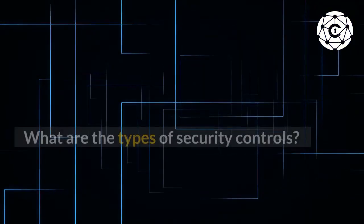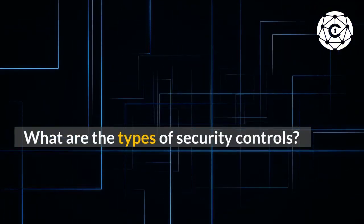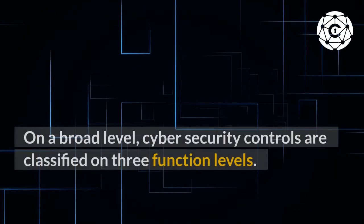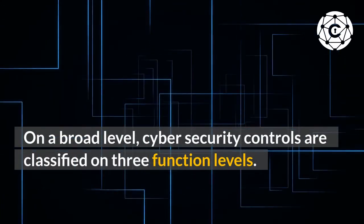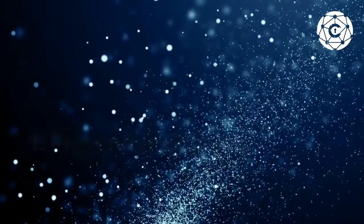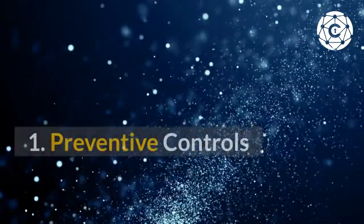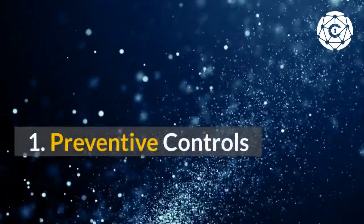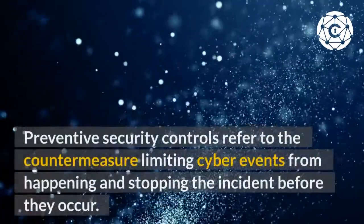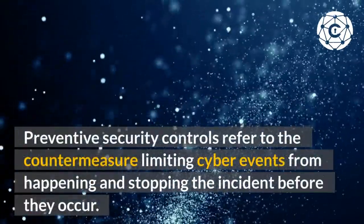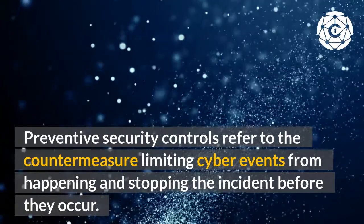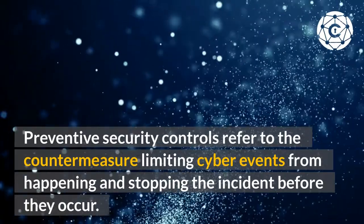What are the types of security controls? On a broad level, cybersecurity controls are classified on three function levels. 1. Preventive controls — preventive security controls refer to the countermeasure limiting cyber events from happening and stopping the incident before they occur.